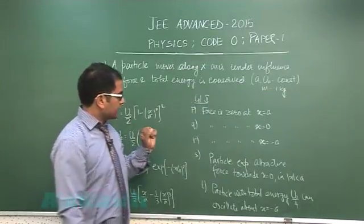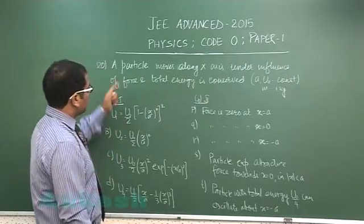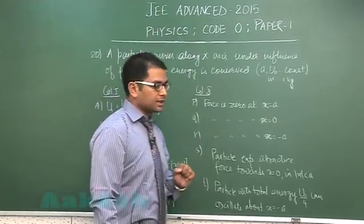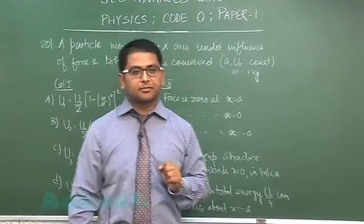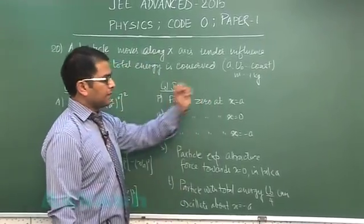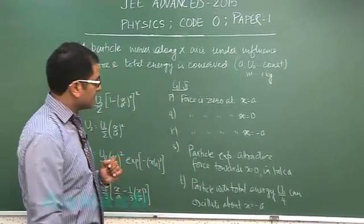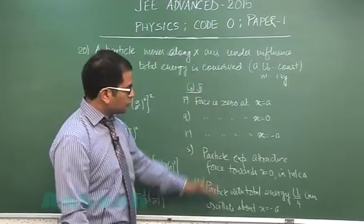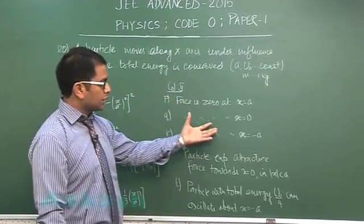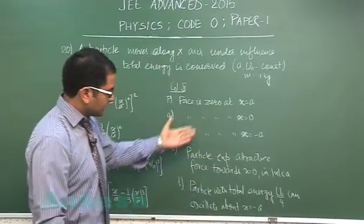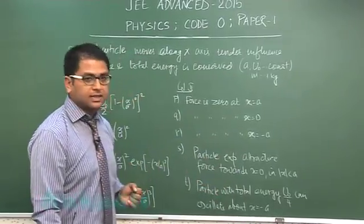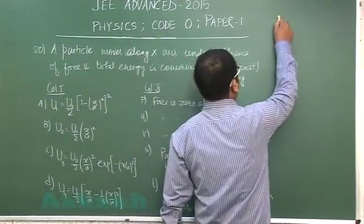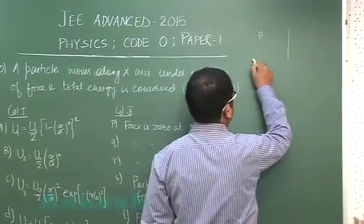Question 20 is another wonderful masterpiece where a particle moves along x under influence of force, and total energy is conserved. That means it's all conservative force which is acting. U₀ is constant and the mass of the particle is 1 kg. Column 1 gives different functions of potential energy, and column 2 gives conditions like whether the force is zero at x=0 or x=-a, whether it's attractive, and whether it would oscillate. The best way is to draw the pattern of potential energy using a graphical approach.